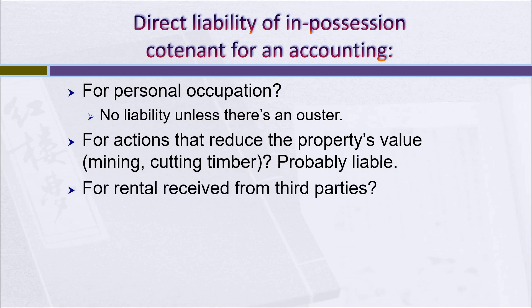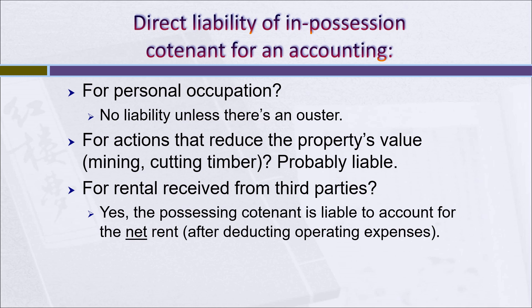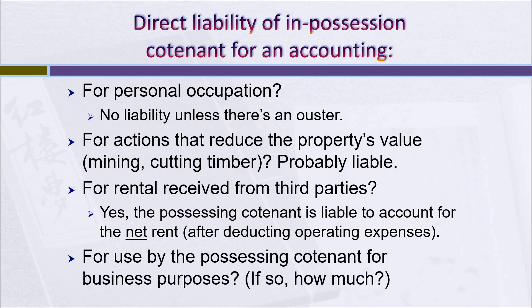What about rental received from third parties? Suppose the one who's in possession rents out the property and collects rent. The answer is yes — they are liable, but they're only liable for the net rent after deducting their operating expenses. Finally, what if the one who's in possession uses the property for business purposes? Should they be held liable for imputed rent on the business? The answer isn't clear — there's almost no case authority on it at all. But you can make a plausible argument that they should be liable at least for the fair net rental value of the property.